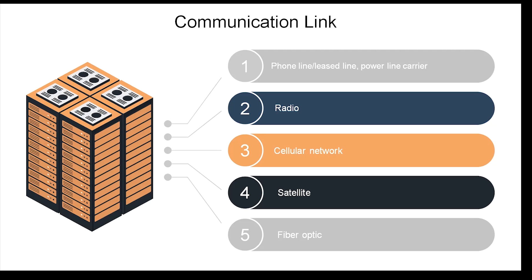What are the different communication possibilities for transmitting data from a remote location to your control room? One option is a phone line or leased line. A second option is radio. A third is cellular network. You can also use satellite, and you can also use fiber optic.